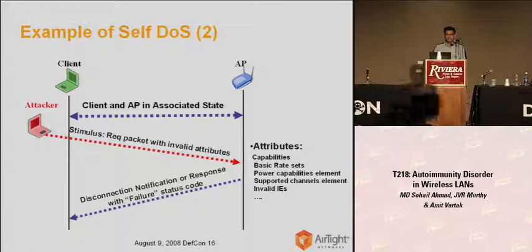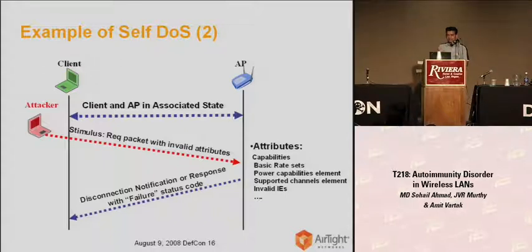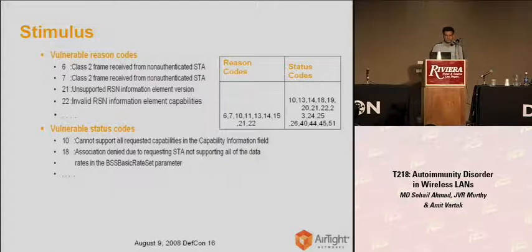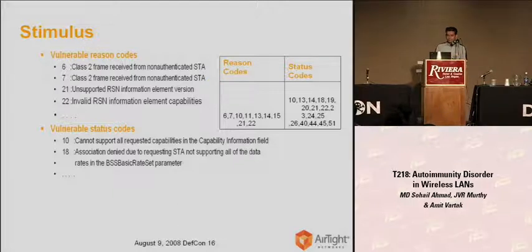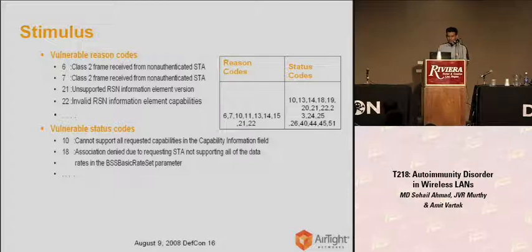An interesting question is: why does the access point send such a response message and break or delete the existing connection? If we look at this response message, we find a special field called reason codes or status codes present in these packets. There are several reason codes or status codes mentioned in the standard. For example, reason code 21 says: unsupported RSN information element version or element capabilities. So access point software, if implementing these reason codes in a state machine or packet processing logic, whenever it receives an invalid RSN information element on behalf of a client, it will send a de-authentication packet to that client.